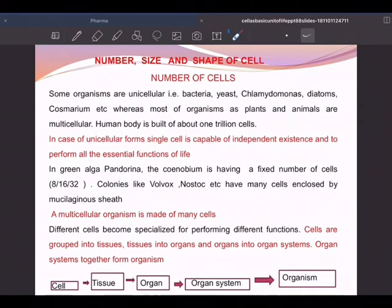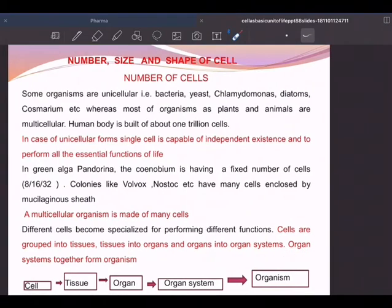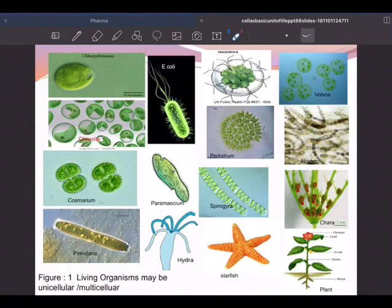Number, size, and shape of the cell. If it is a number, based on number, we have got unicellular organisms and multicellular organisms. Based on the size and shape, we call them with different names. The cell: many cells join together and form tissues, tissues will form organs, organ system, and finally organism. This is the hierarchy.